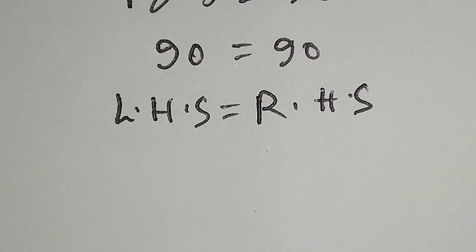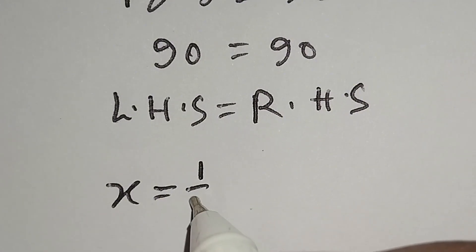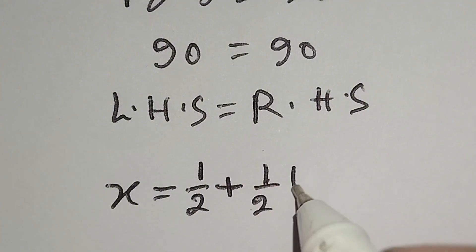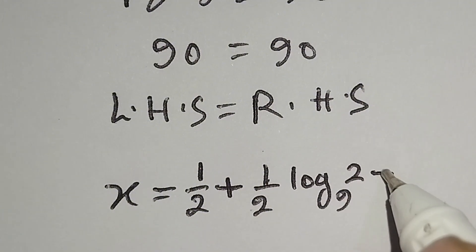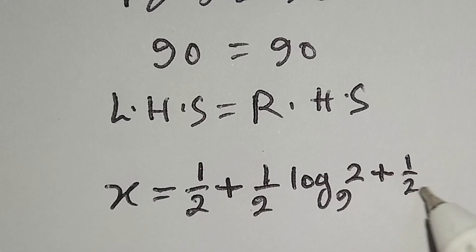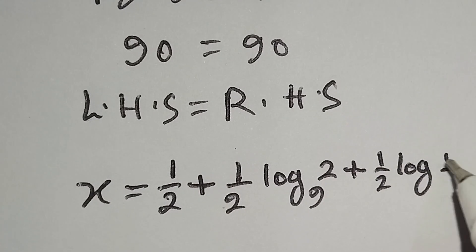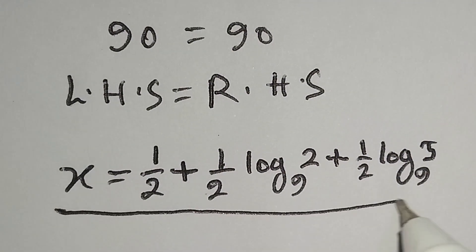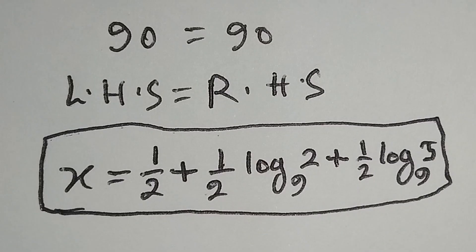So x is equal to 1 over 2 plus 1 over 2 log 2 to the base 9 plus 1 over 2 log 5 to the base 9 is our final answer. Thanks for watching the video. Please like, comment, share, and subscribe.